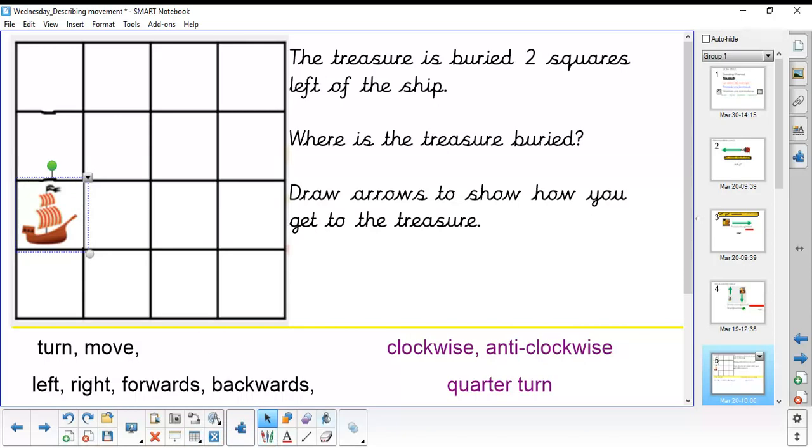Okay, let's see if you were right. The treasure would be here in this square. The boat would move to the left and go along two squares.